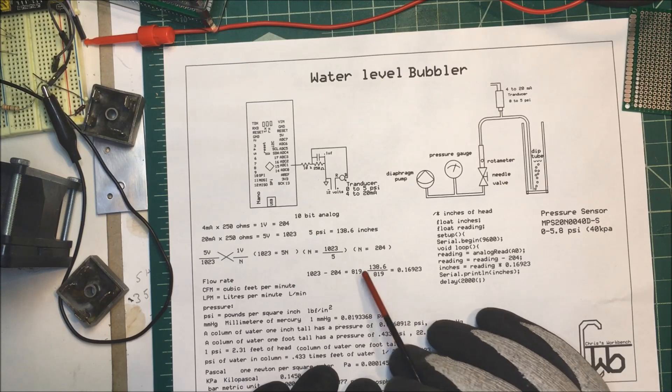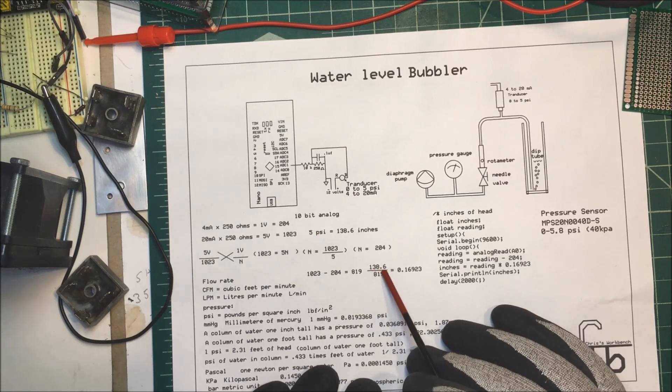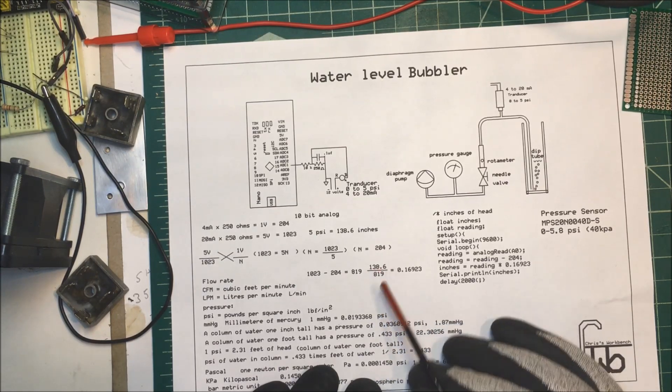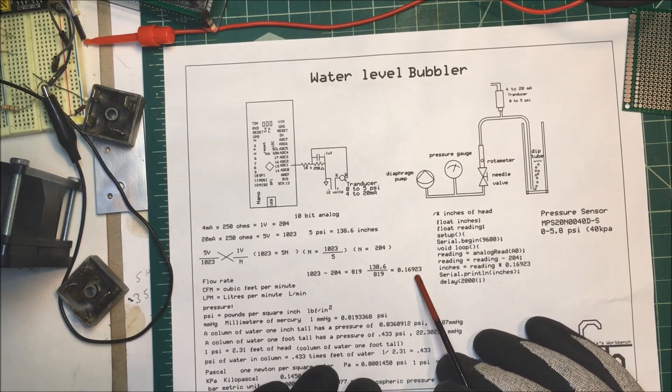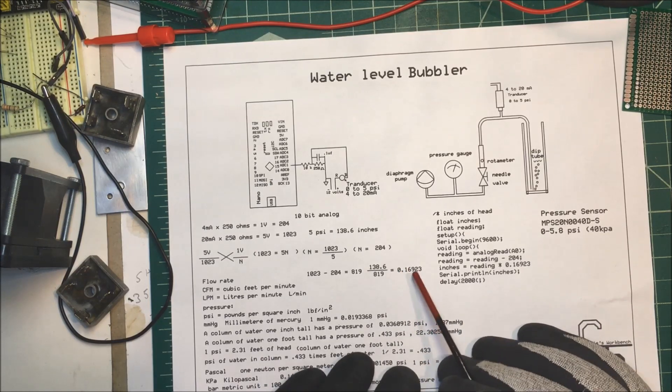Now we take our 819, our span, and we divide that into our 138.6. And it gives us this factor here that we can use to determine the height of the water.